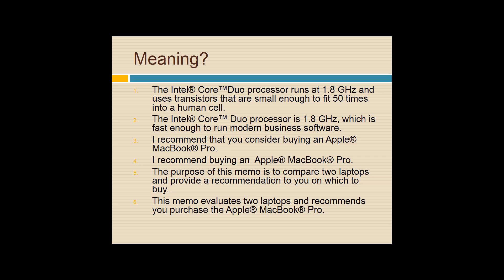Consider this: 'The Intel Core Duo processor runs at 1.8 GHz and uses transistors that are small enough to fit 50 times into a human cell.' If you're comparing two laptops to help a customer or IT department pick laptops for the sales force, nobody probably cares — except Intel marketing — that all these transistors will fit into a human cell. It's probably completely unimportant. Focus on what the customer really wants to know. They probably don't even care that the processor is at 1.8 GHz — they probably care it's fast enough to run modern business software.